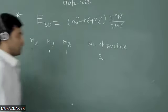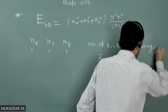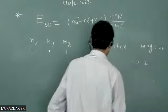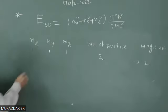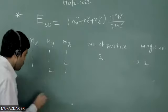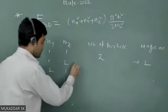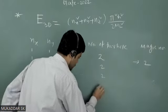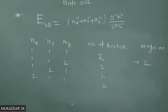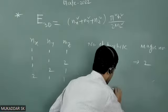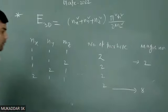For the state (1, 1, 1), the magic number will be 2, because the number of particles is 2. The next sets of (nx, ny, nz) can be (1, 1, 2), (1, 2, 1), and (2, 1, 1). For each set, the number of nucleons is 2. So for these three states we get 2 + 2 + 2 = 6 nucleons, and adding to the previous 2, this gives the next magic number: 8.